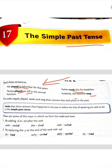See, what is written here? The verbs stayed, played, made and rang show actions that took place in the past. तो यह सब हमें वो actions के बारे में बता रहे हैं जो actions हमारे past में हुए हैं।